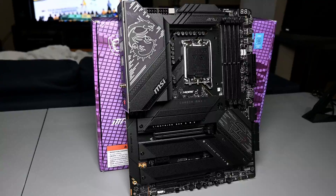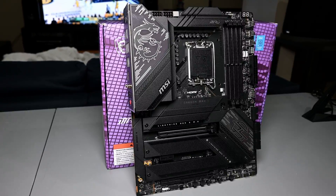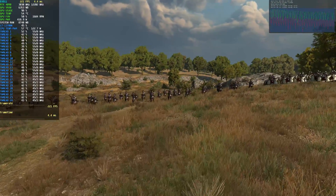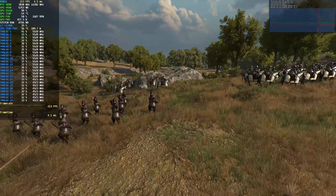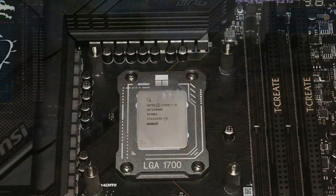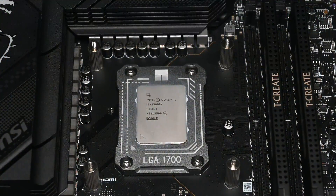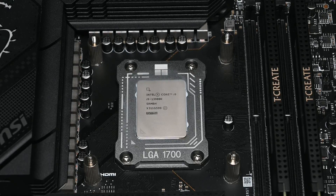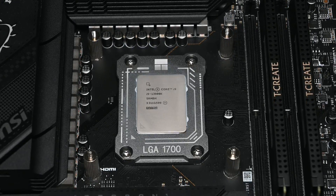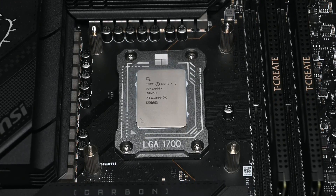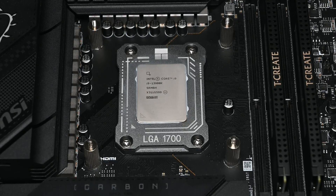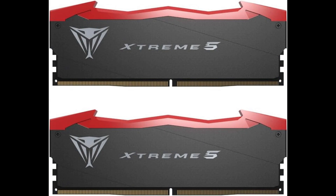I benchmarked 19 different games to give us more data to work with and let us look at which ones benefit more and which ones do not. For the CPU, we have an Intel Core i9-13900K, with P cores running at 5.7GHz, E cores locked at 4.6GHz, and the cache overclocked to 5GHz. We've got 48GB of Patriot Viper Extreme DDR5 running at 7,600 megatransfers, CL36 with manually adjusted timings.